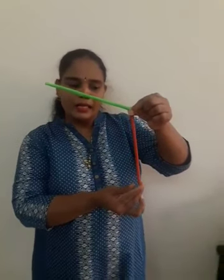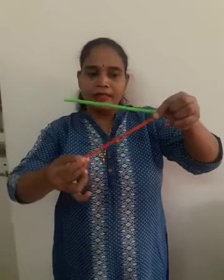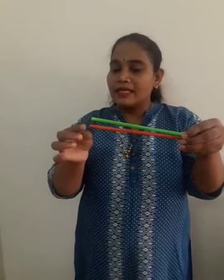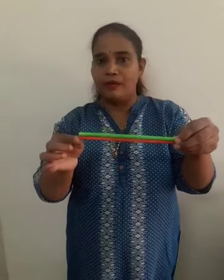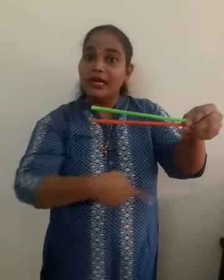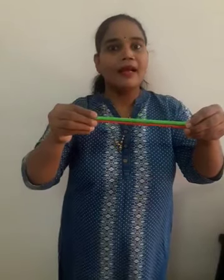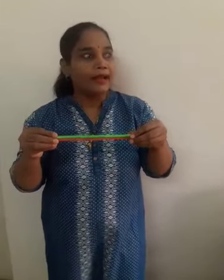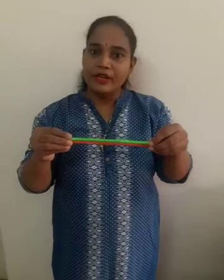Now turn the stick again. This stick has completed one full round and come back to its original position. So this angle is called a complete angle. Complete angle means if the measure of the angle is 360 degree, that angle is called a complete angle.